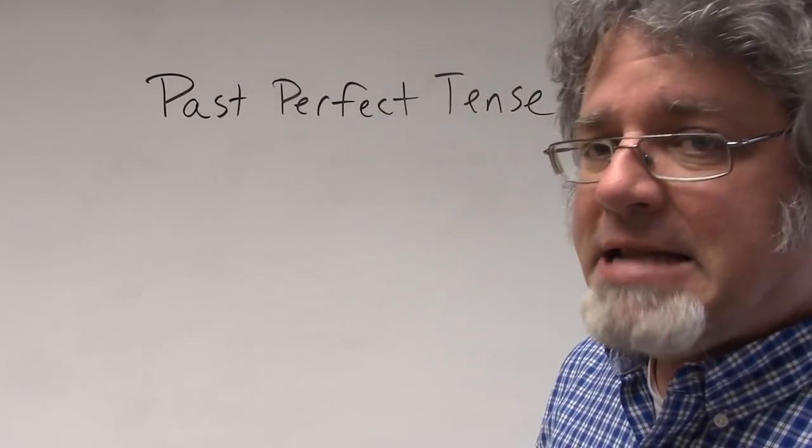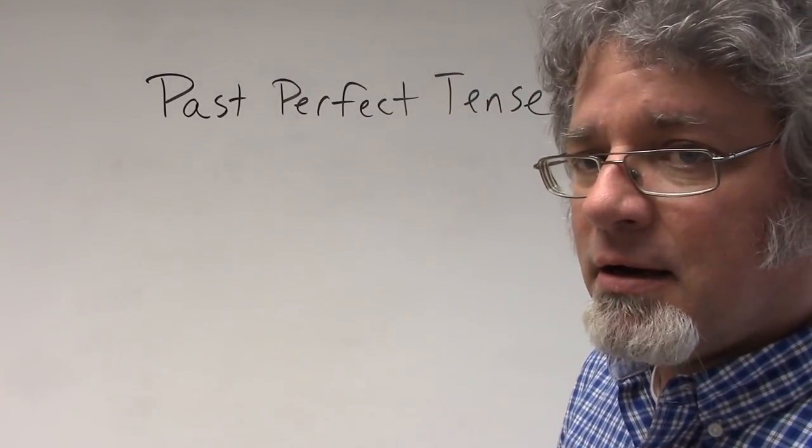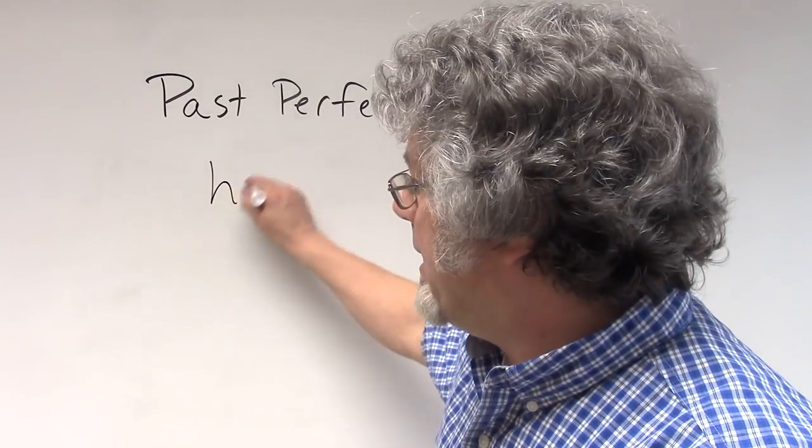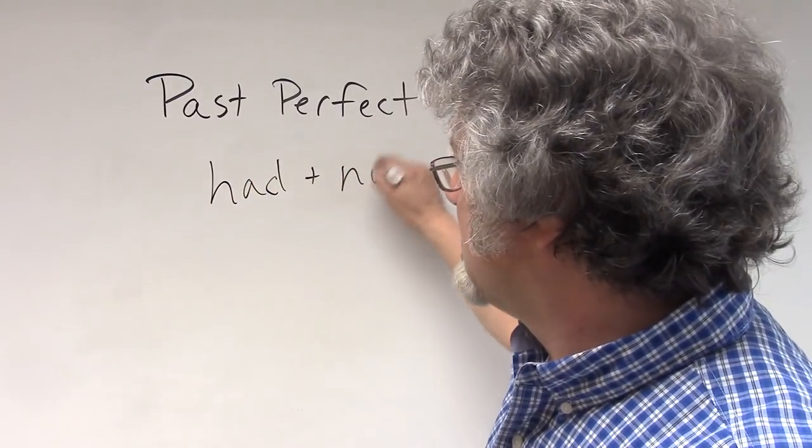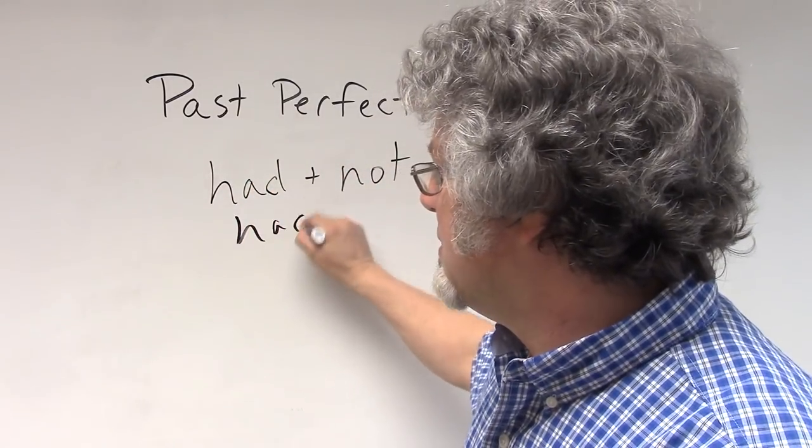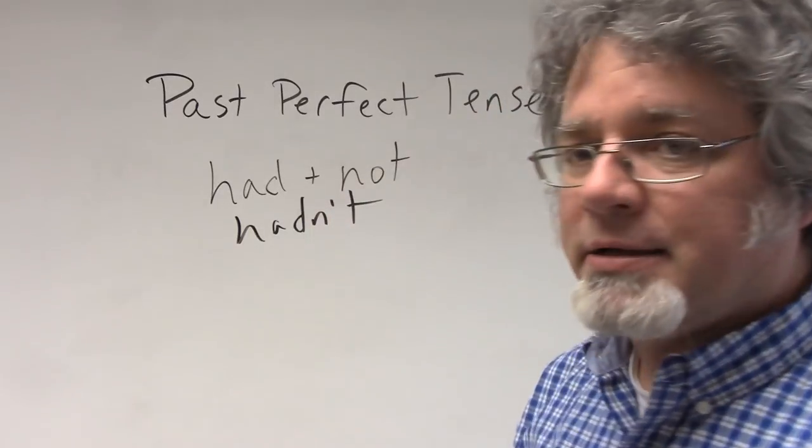You can make the helping verb 'had' negative by adding a contraction: had plus not becomes hadn't.